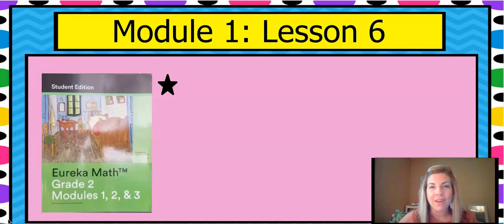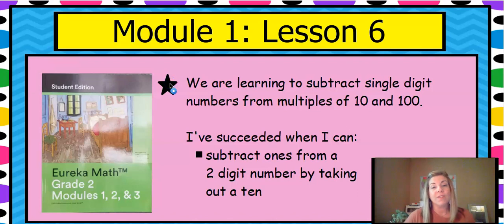So we are in Module 1, Lesson 6, and this is our objective today. We're learning to subtract single digit numbers from multiples of 10 and 100. So 10, 20, 30, 40, 50, 60, 70, 80, 90, and 100, 200, 300, 400. So just the tens and the hundreds right now. And you'll know that you've succeeded when you can subtract the ones from a two-digit number by taking out the 10.